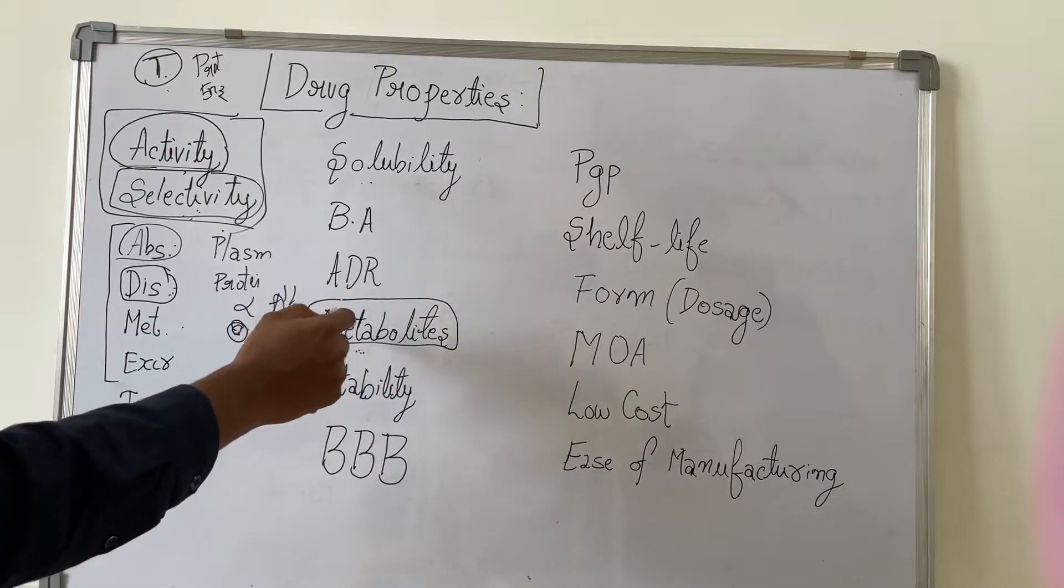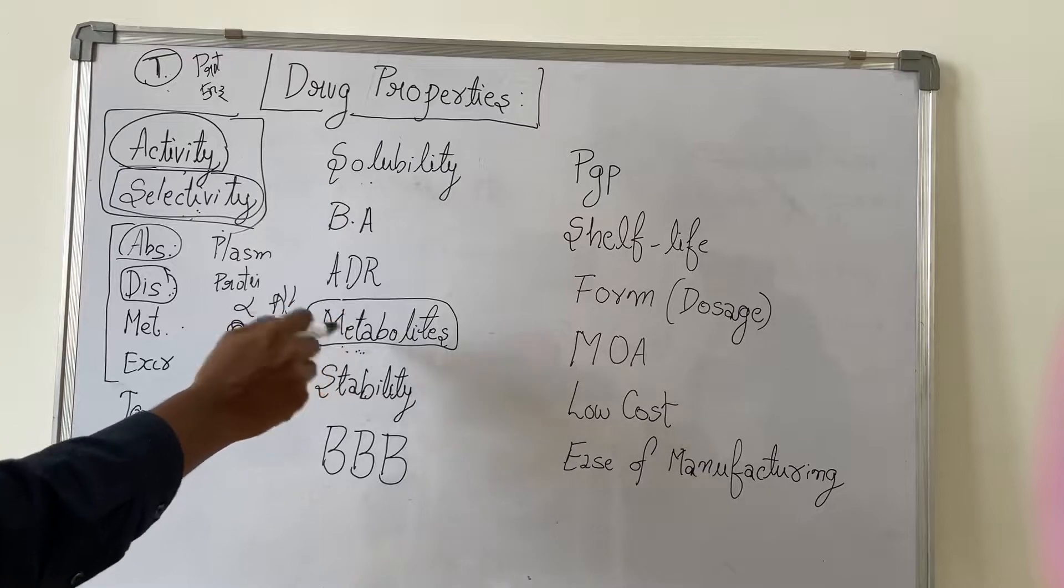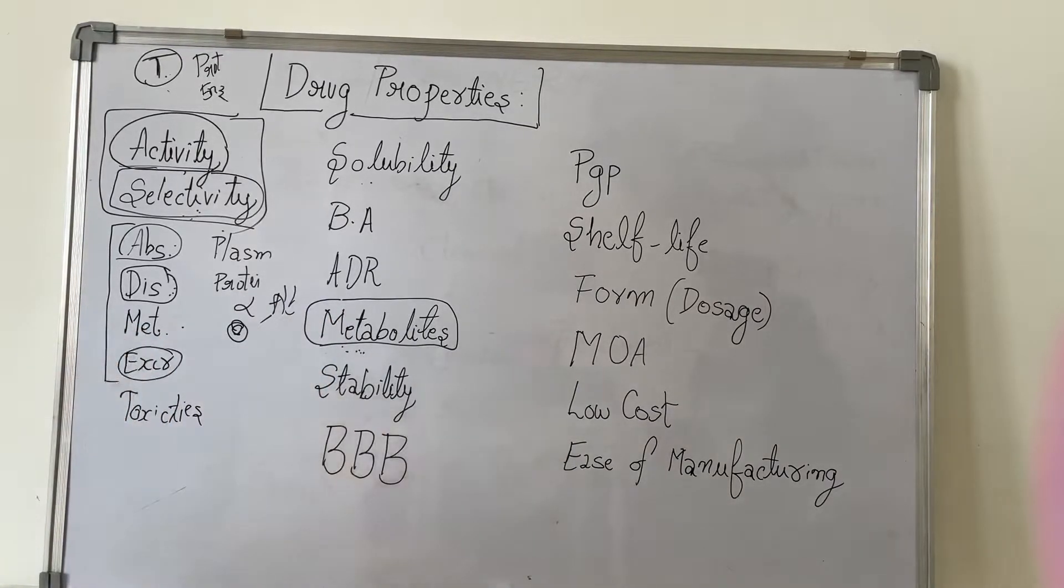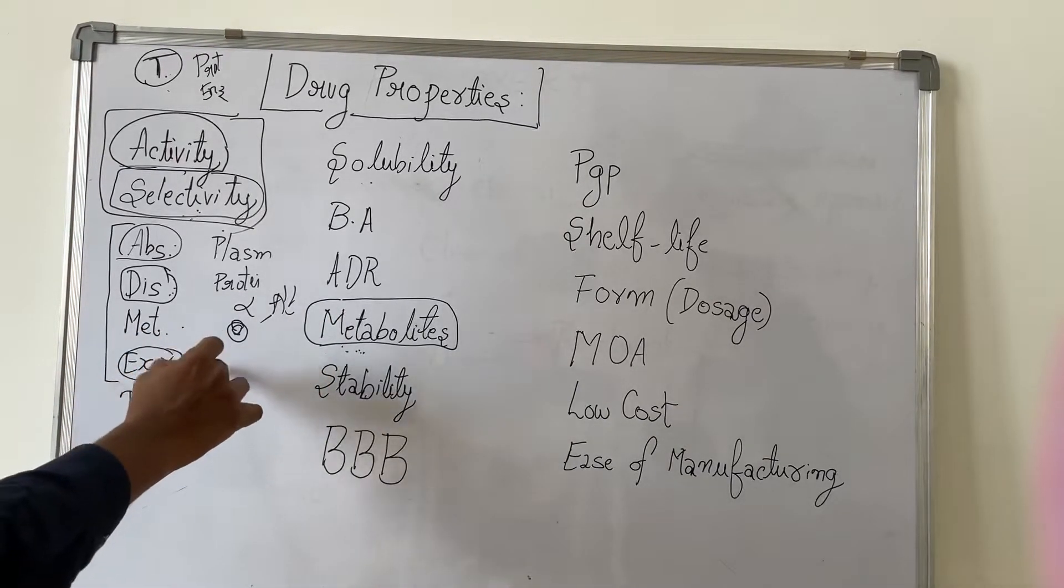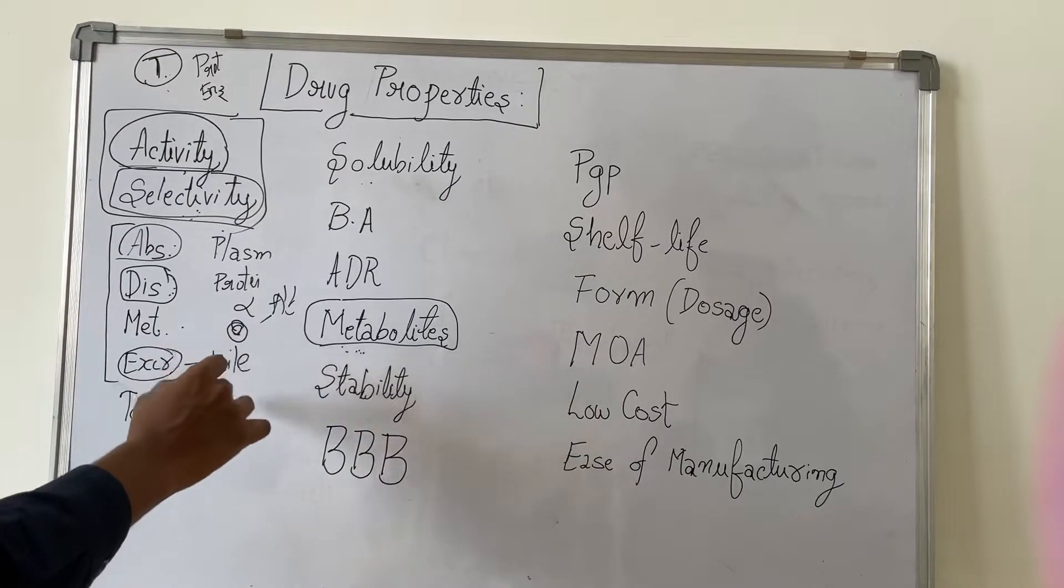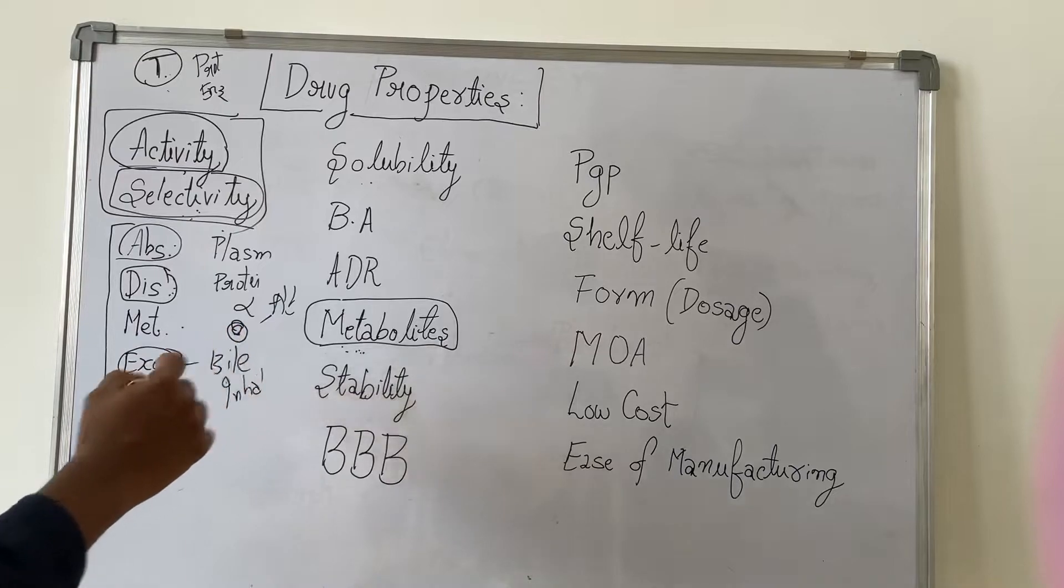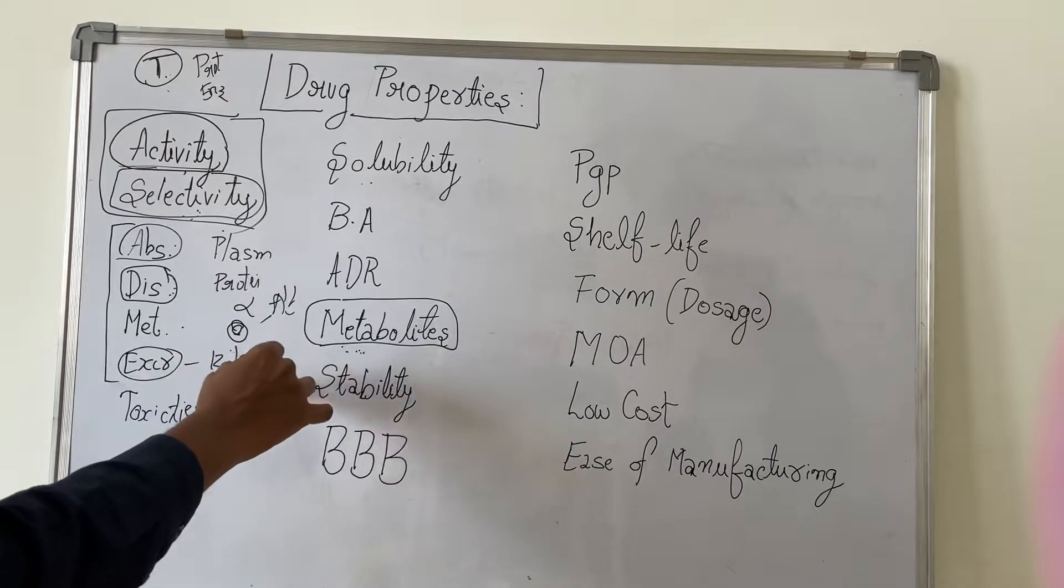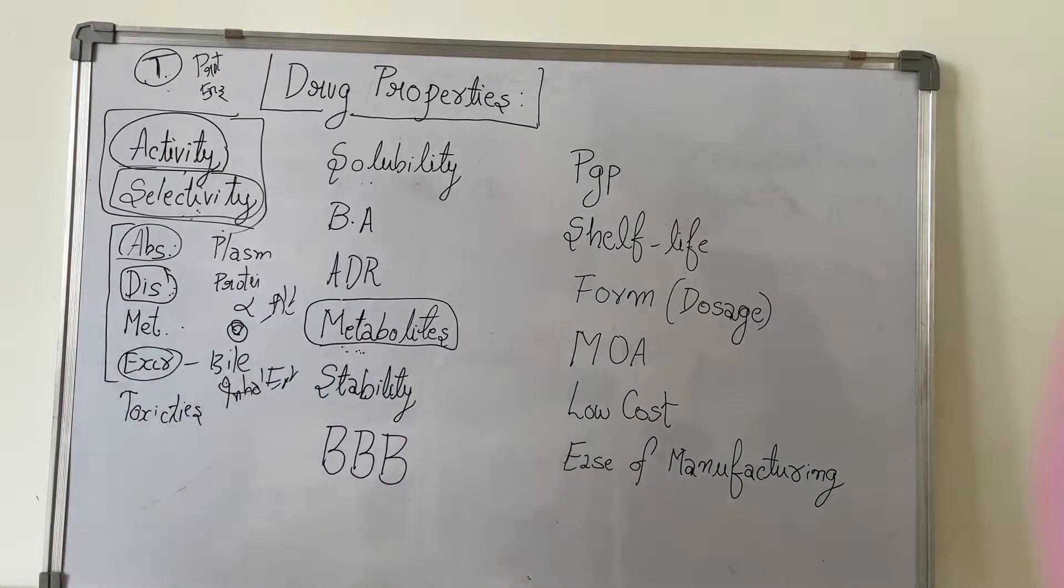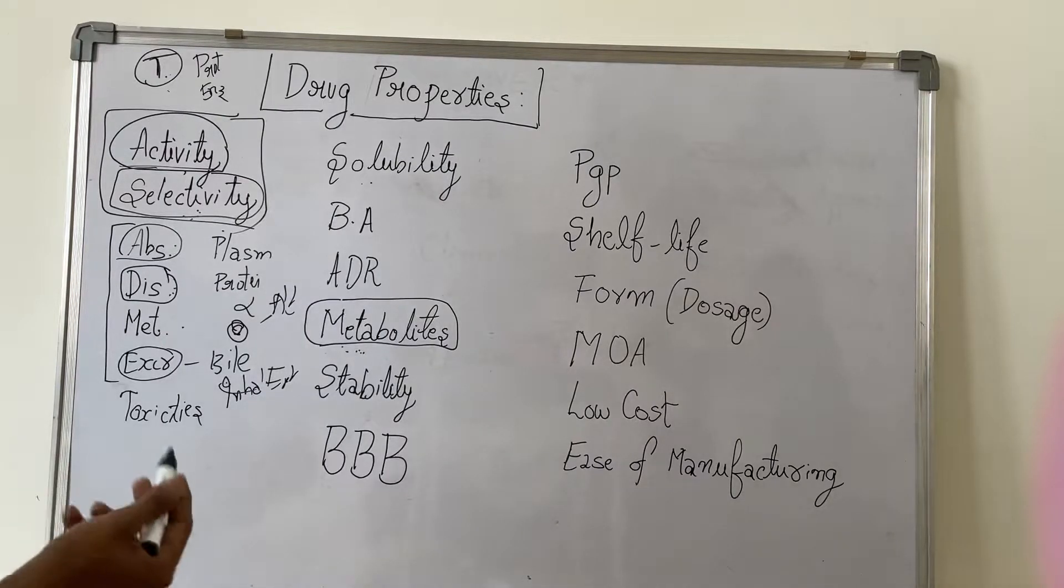These parameters also will be assessed during drug discovery and development. Next one is excretion. Through which route is it being excreted? It may be excreted through urine, it may be excreted in bile, it may be excreted even during exhalation. There are different pathways.